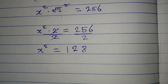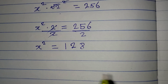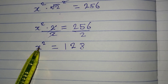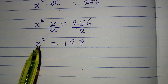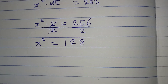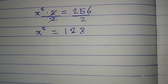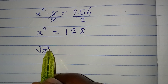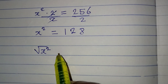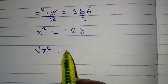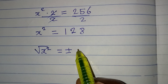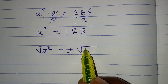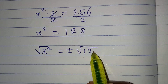There is something again — we have to eliminate this square from here as well, and we do that by squaring both sides. So we square x squared, and it will be equal to a positive or negative square root of 128.